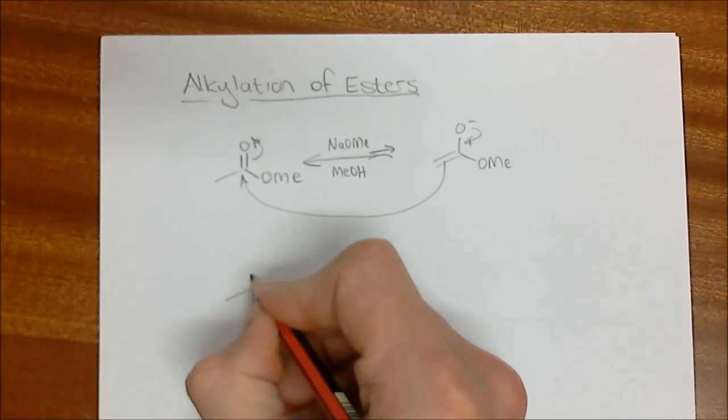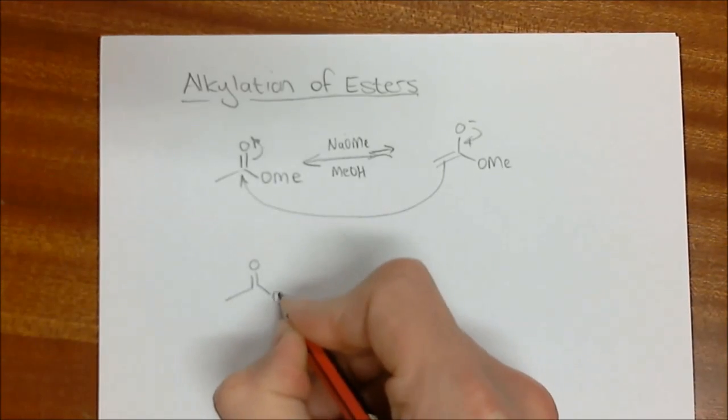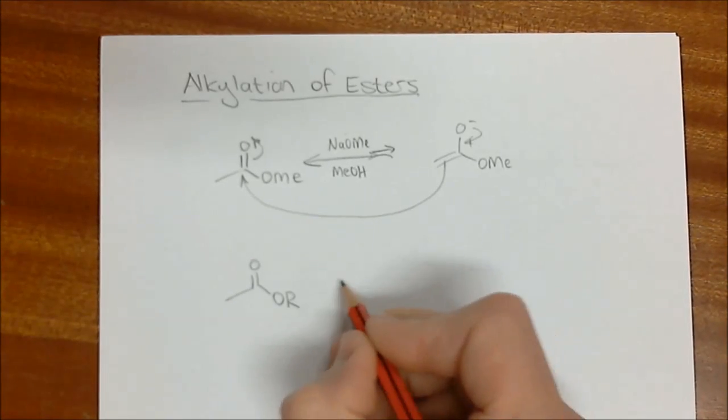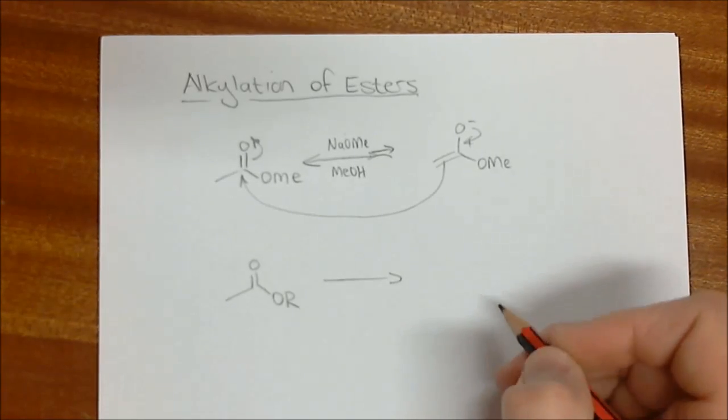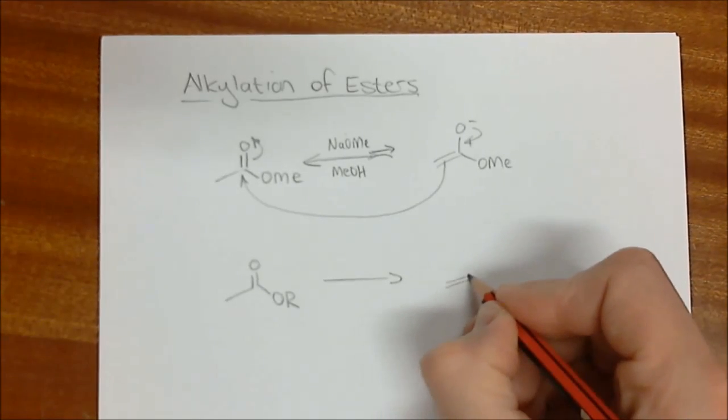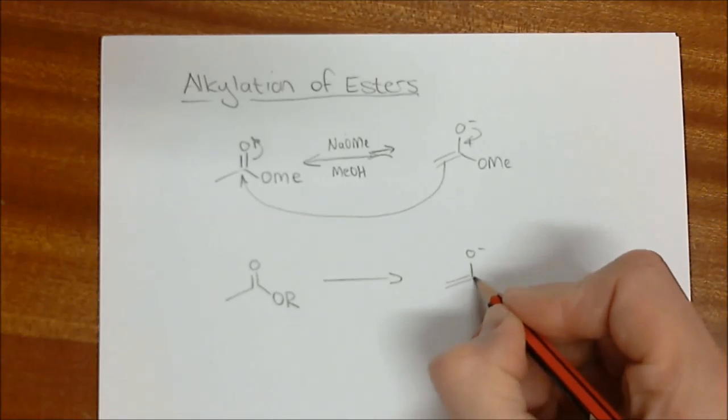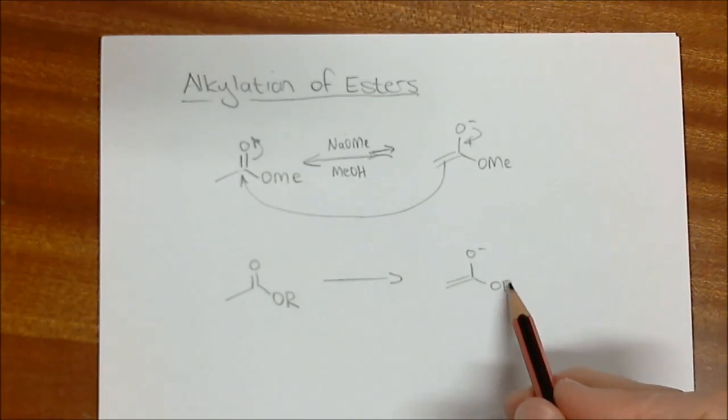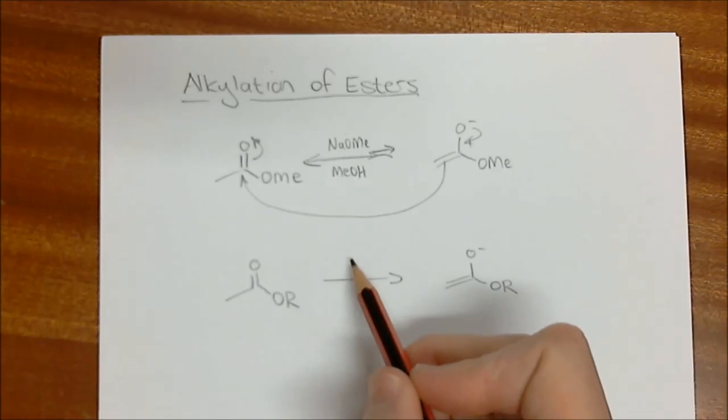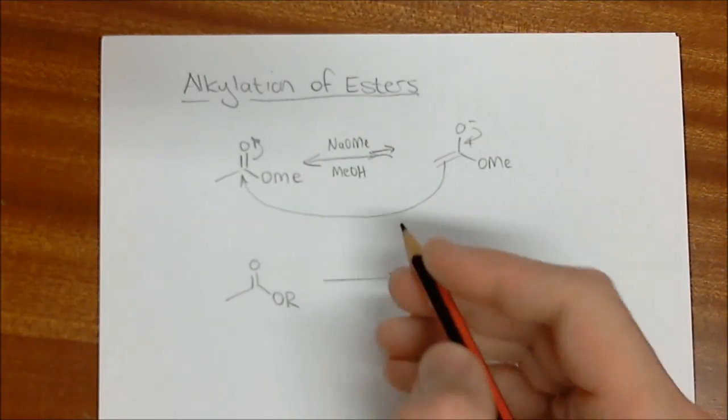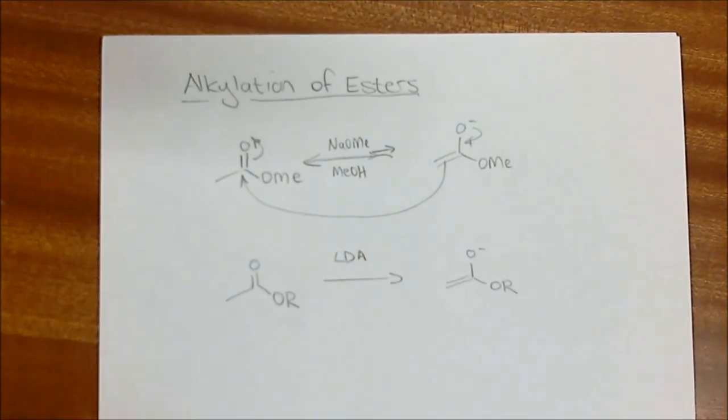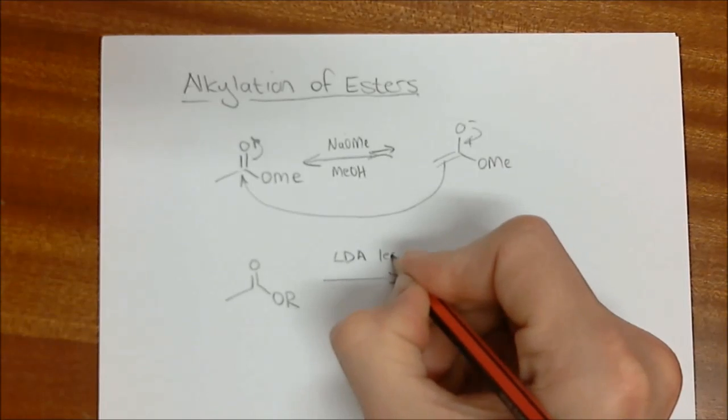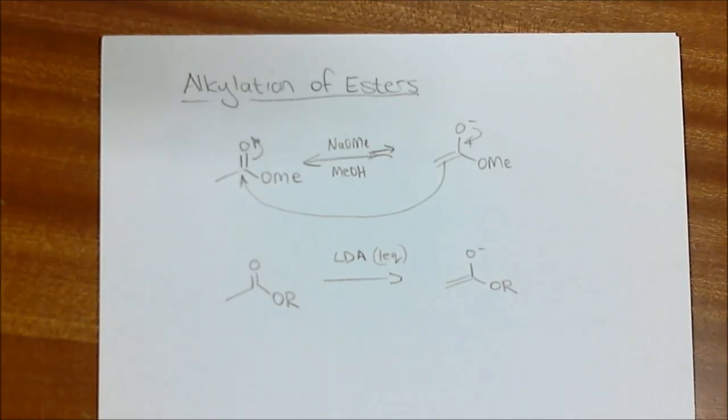If we want to do an alkylation at this point, we need to push it all the way over to generate the enolate. The obvious answer is that we need to use a base which is very strong and non-nucleophilic, and our go-to base for that is LDA. We're obviously going to need one equivalent of that.